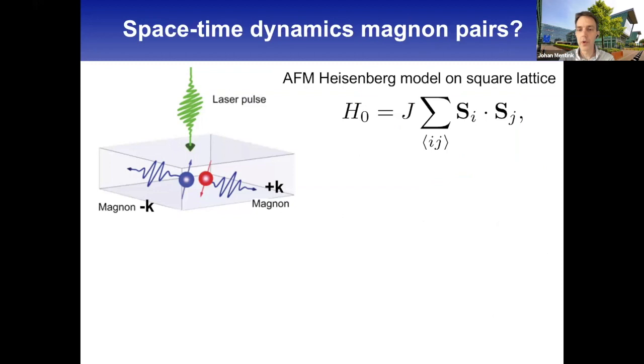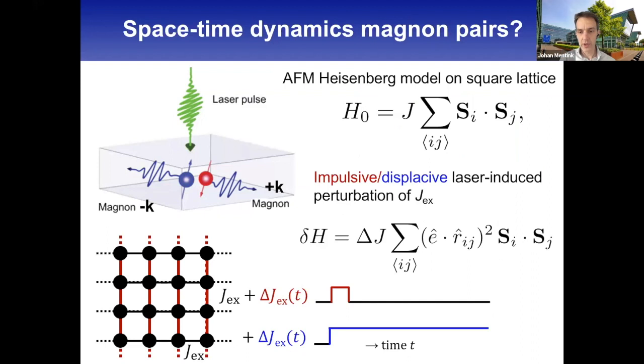The minimal model is the square lattice Heisenberg model. The typical perturbation looks like this - in the standard setup we perturb only the vertical bonds by a small perturbation. Either we do this impulsively, typical for a laser pulse, or we do a single quench, which is displacive excitation but the typical quench setup used in quantum many-body physics.